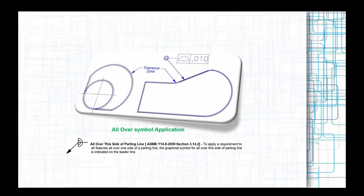Let us look at the all over symbol. If you look at the parting line of symbols, clause 3.14.2 of casting code Y14.8 2009 — this is Y14.5 2009 for GD&T in the global ASME series, and Y14.8 is for the casting series. From there they derived this symbol. We used to use this all over parting line symbol there, and they derived it from that.